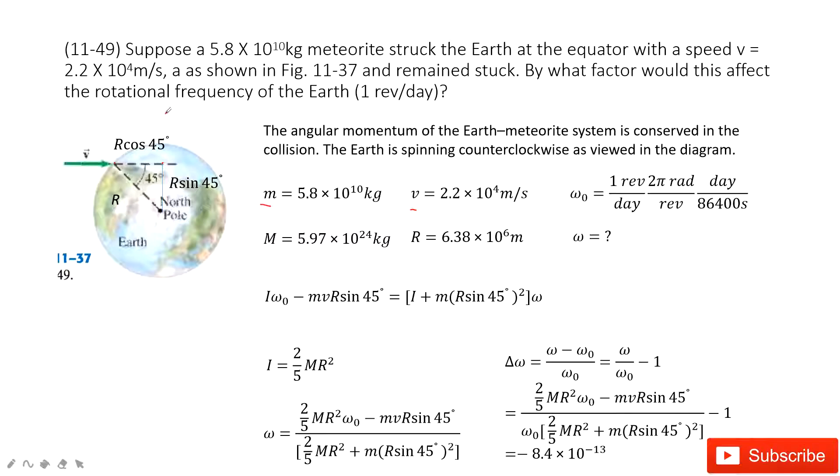So we can see the earth is rotated around itself at omega. Omega naught is given. It is one revolution per day. You can convert the unit to radians per second. And then the mass of the earth is given and the radius for earth is given. We need to find by what factor does this affect the angular velocity for earth.